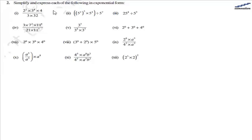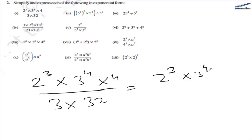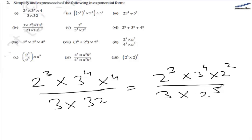In this question we need to simplify these terms and find the answer. The first one is 2 raised to the 3, multiplied by 3 raised to the 4, and 4 raised to the 2. In the denominator we have 3 multiplied by 32. Now 4 raised to the power 2 equals 2 raised to the power 4, and 32 can be written as 2 raised to the power of 5. In the numerator we have 2 raised to the power of 3 multiplied by 2 raised to the power of 2. Since the base is the same, the powers add up: 3 plus 2 equals 5.